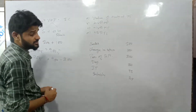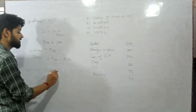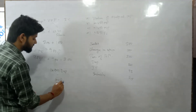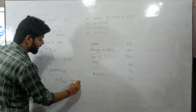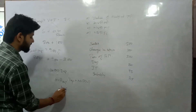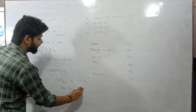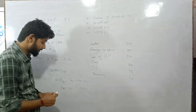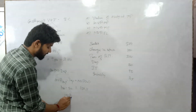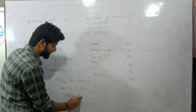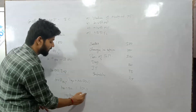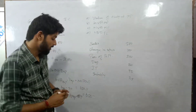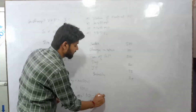Next, Net Value Added at Market Price. We know that Gross minus Net equals Depreciation. So: GVA at MP minus Depreciation equals NVA at MP. GVA at MP is 700, Depreciation is 50, so NVA at MP equals 650. The last step is Net Value Added at Factor Cost: NVA at MP minus Indirect Tax plus Subsidy. So 650 minus 75 plus 50 gives 625 — wait, deducting gives 600. Net Value Added at Factor Cost is 600 lakh.